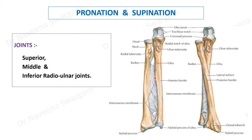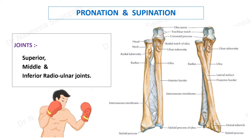The interosseous membrane is relaxed in full supination and in full pronation, whereas it is stretched out in the mid-prone position of the forearm, where the radius and ulna are placed at their maximum distance. This is helpful in distributing forces from the lower end of the radius equally onto the ulna, preventing displacements at the elbow joint. This is why the mid-prone position of the forearm is used in most defense gestures for powerful kicks. The inferior radio-ulnar joint is also a pivot variety of synovial joint, where the head of the ulna rotates over a triangular-shaped articular disc.